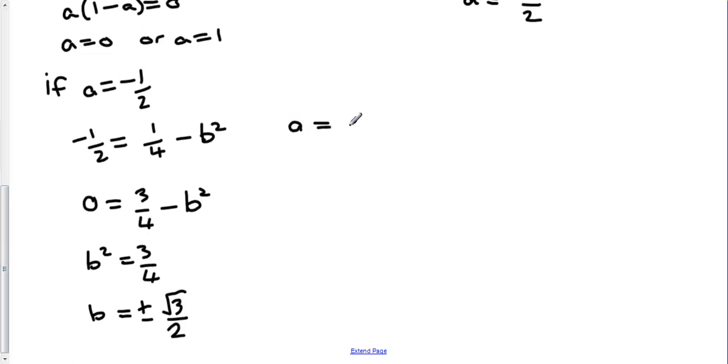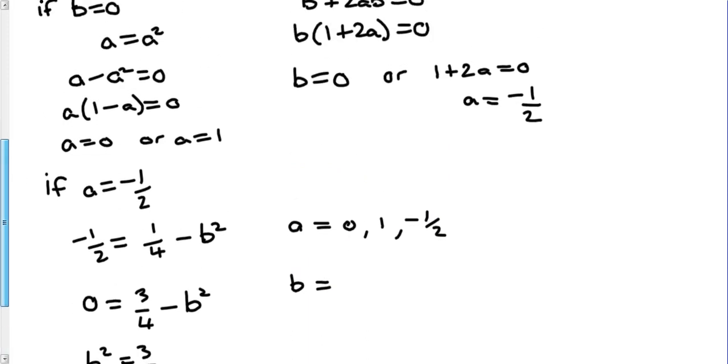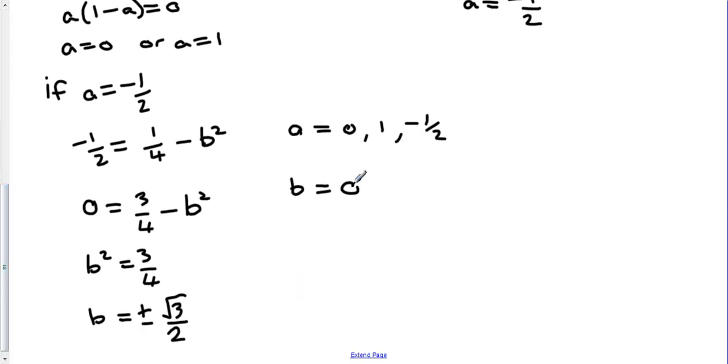So just to recap, all of our solutions are: a can be 0, 1, or negative a half. And b, let's just have a look up here, we've got b is 0, root 3 over 2, or minus root 3 over 2.